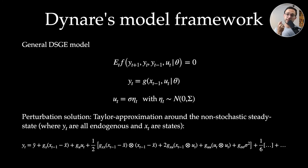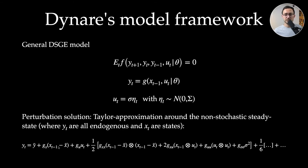This policy function or decision rule is usually unknown and needs to be approximated. The most used method is called perturbation, where the idea is to compute Taylor approximations of g around the non-stochastic steady state. We introduce a perturbation parameter sigma, which is zero at the non-stochastic steady state, and obtain an approximated decision rule with first-order terms, second-order terms, third-order terms, and so on.